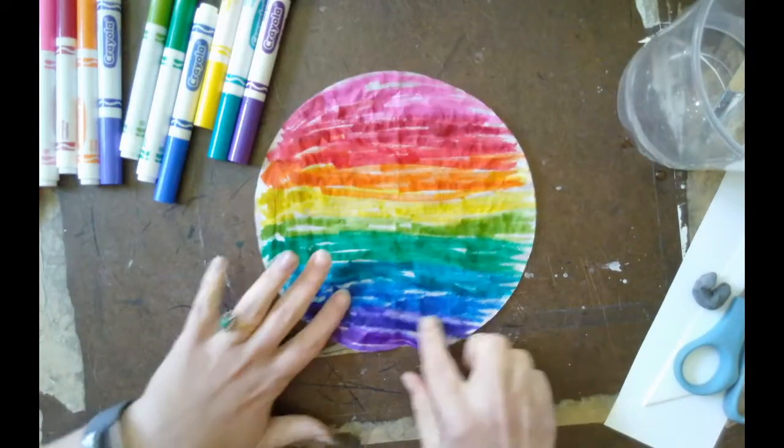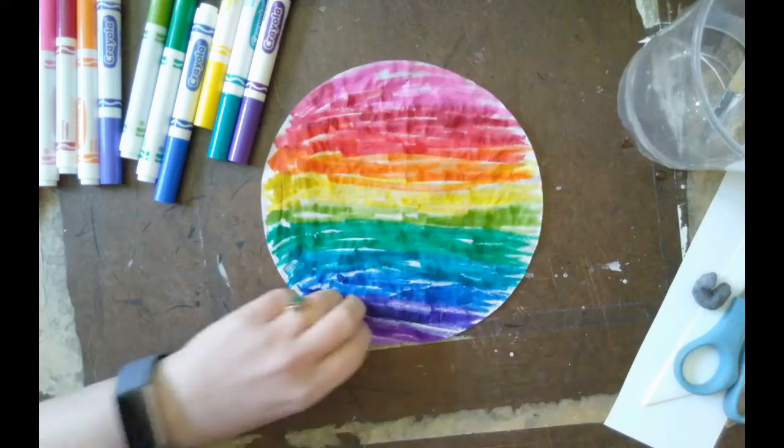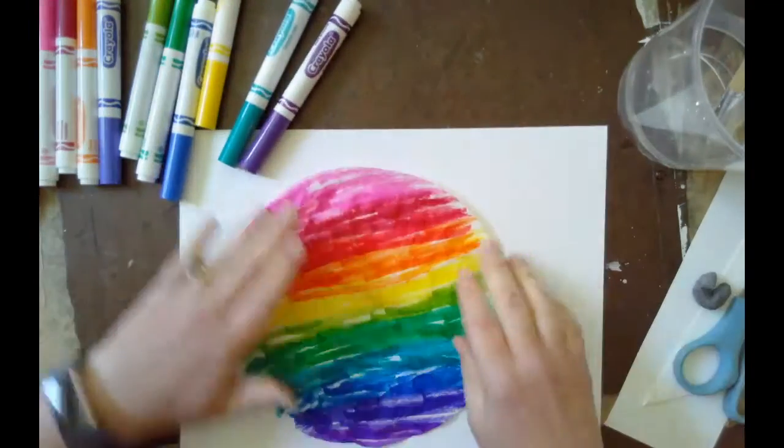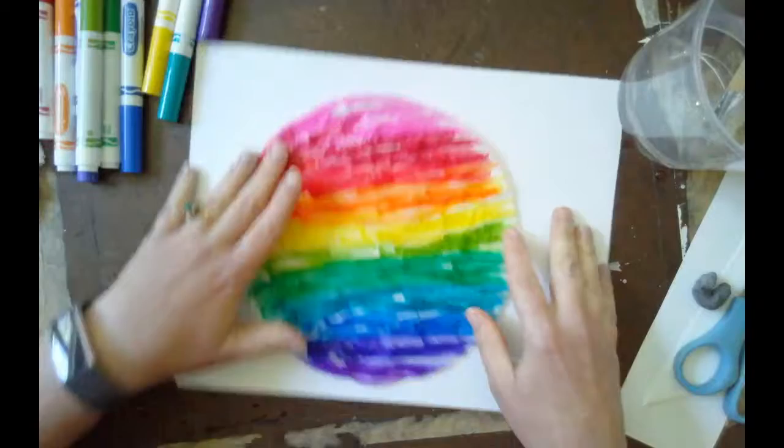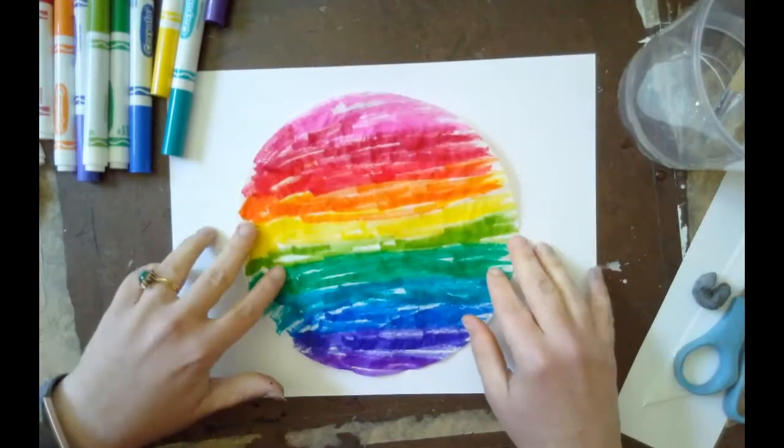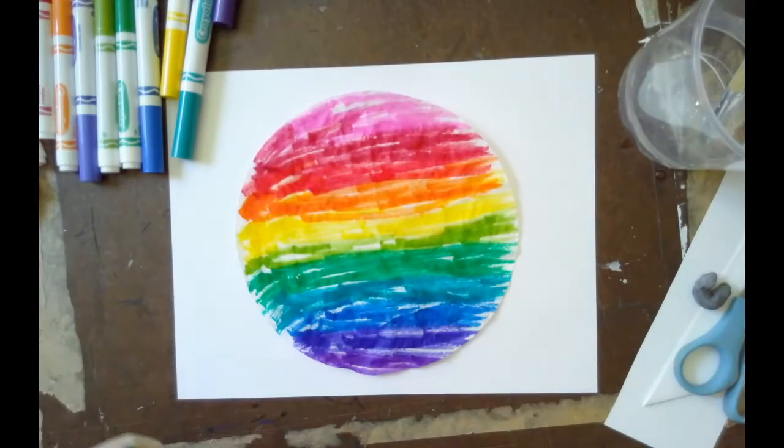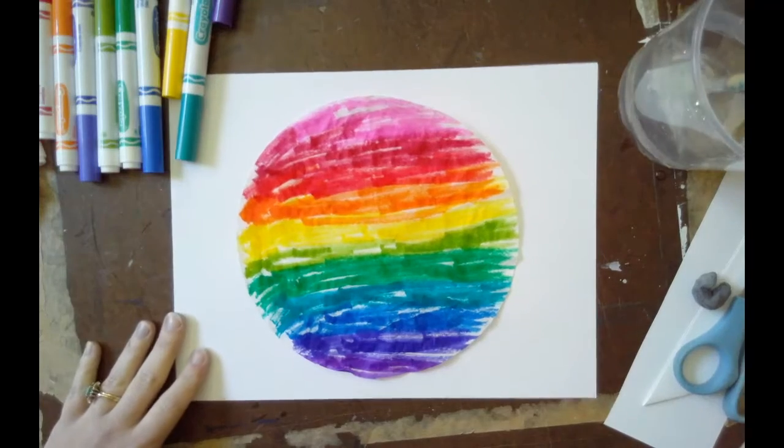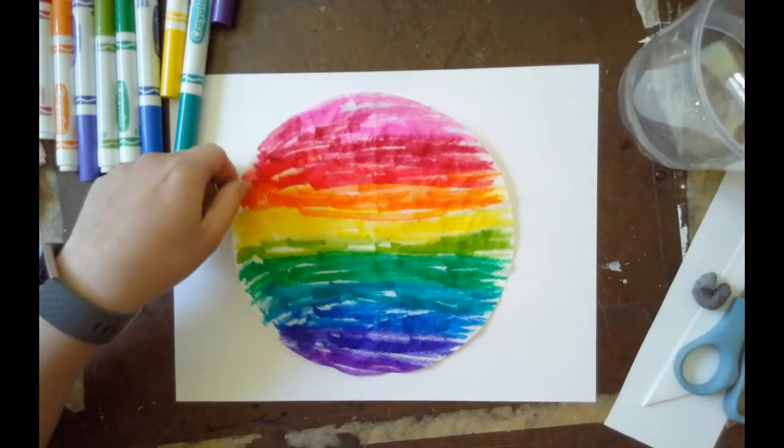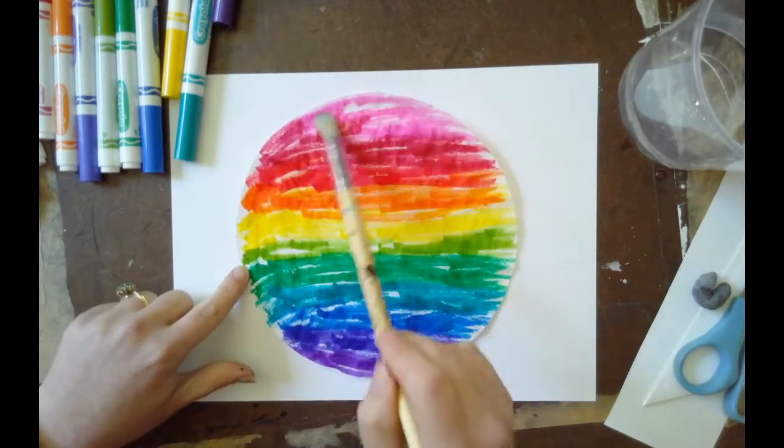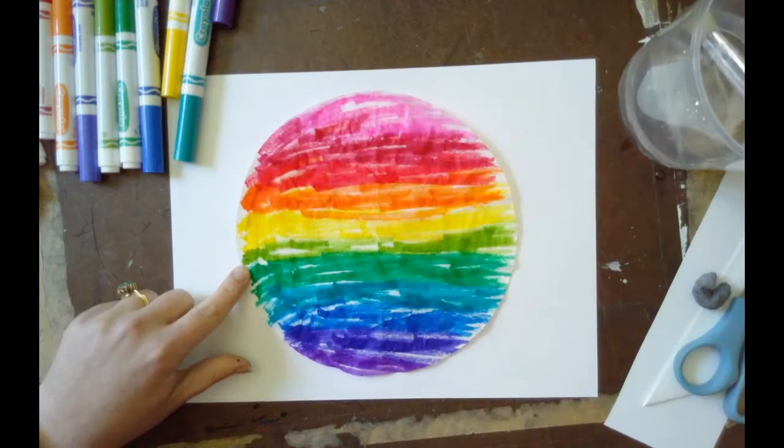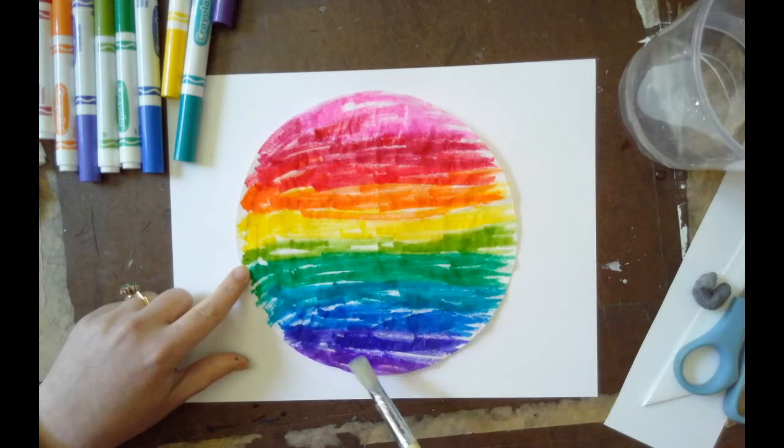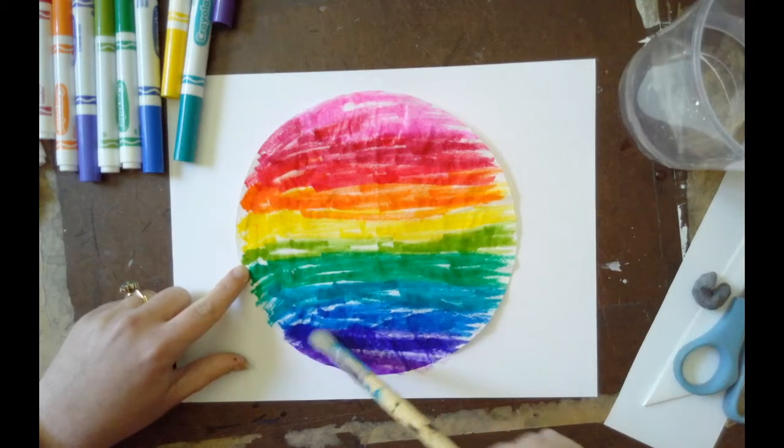I'm going to put my coffee filter on top of a white piece of paper to help with the mess, and some of that color will transfer underneath so we'll get an additional print out of it. I'm going to take some water and a paintbrush, and I like to first just kind of tap around on the sides. That will help hold my coffee filter in place.